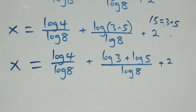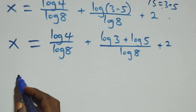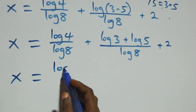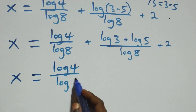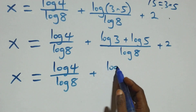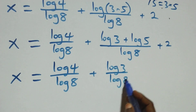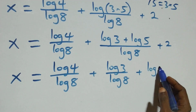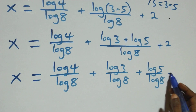Separating into individual fractions, we have x equals log four over log eight, plus log three over log eight, plus log five over log eight, plus two.